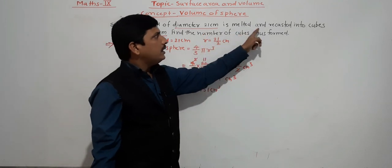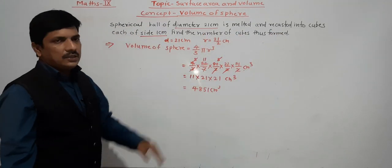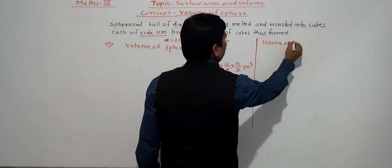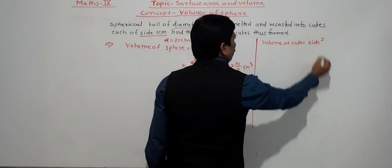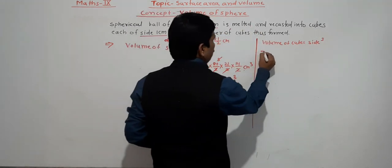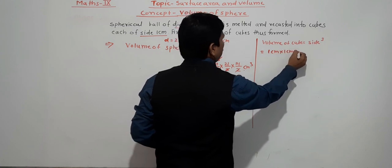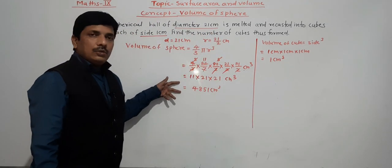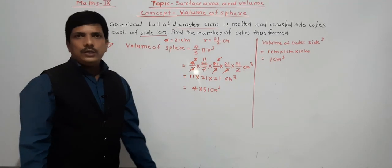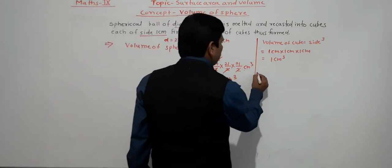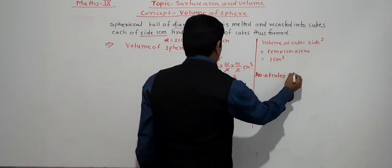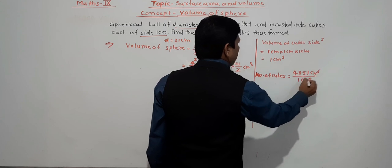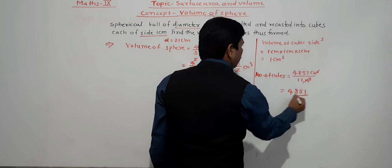The sphere is recast into cubes each of side 1 cm. Volume of cube equals side cubed, so 1 × 1 × 1 equals 1 cm cube. Number of cubes equals volume of sphere divided by volume of cube: 4851 cm cube divided by 1 cm cube equals 4851 cubes.